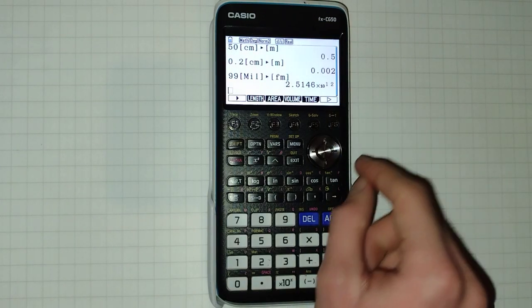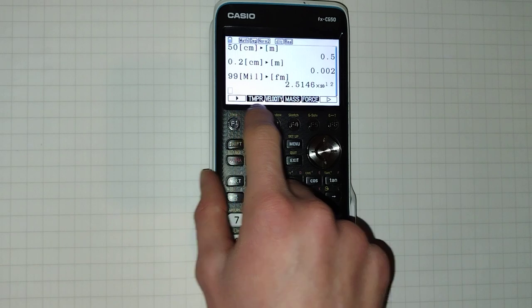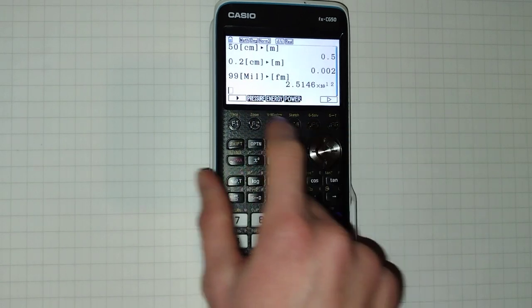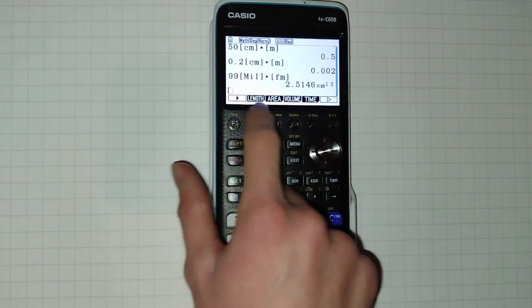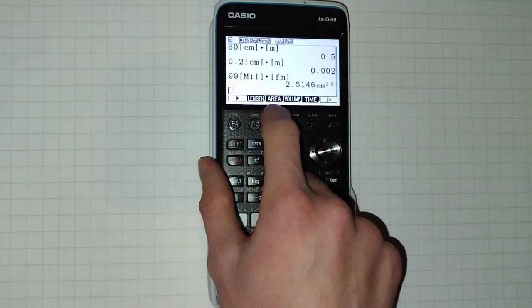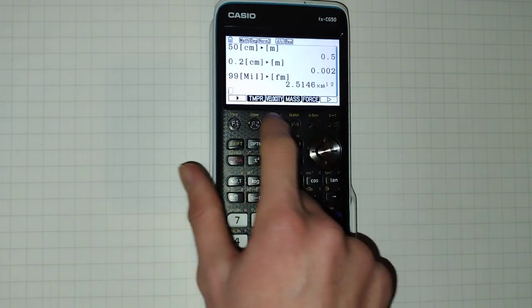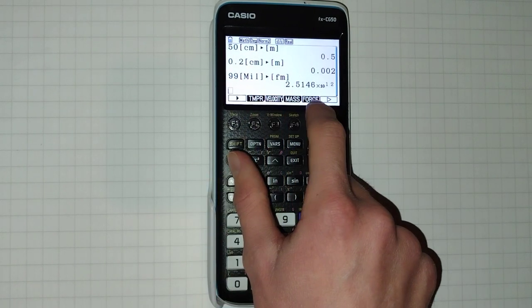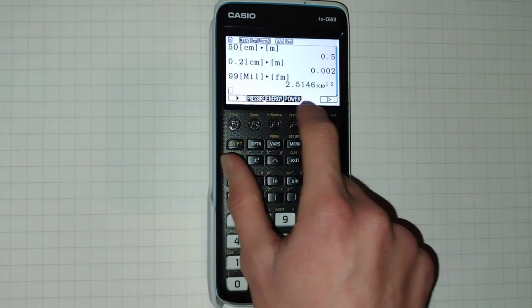Clicking F6 will show you there's more and F6 again one final menu and then back to this one so you can do length area volume time temperature velocity mass force pressure energy and power.